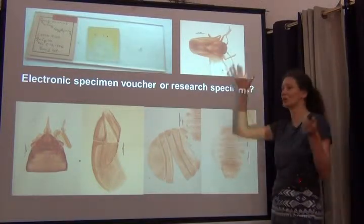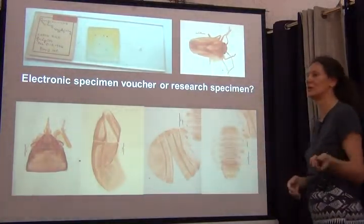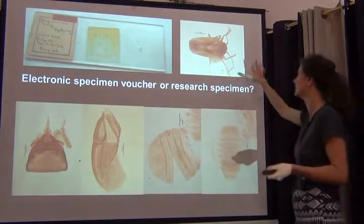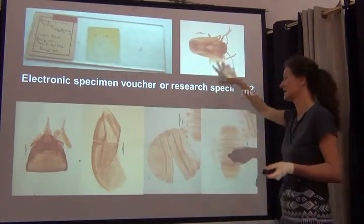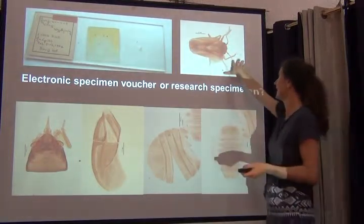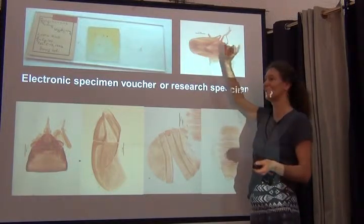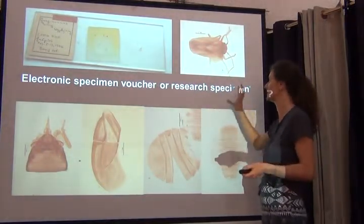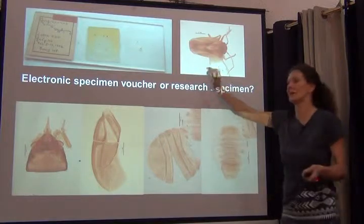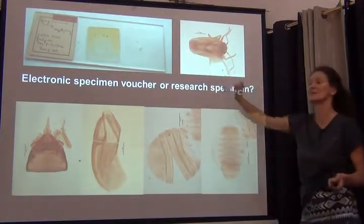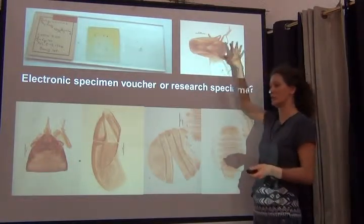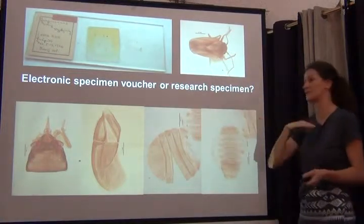Then there's what I call an in-between level — not just a voucher for data digitization, but a little bit higher quality, still not quite there for research purposes. This is what we're doing a lot in the lab for routine documentation of specimens. We're talking really tiny insects here — a lot of the specimens I'll be showing are about one millimeter. In many cases we would just do one dorsal habitus shot for documentation purposes.